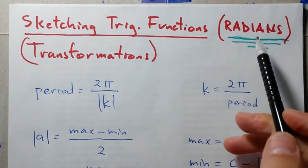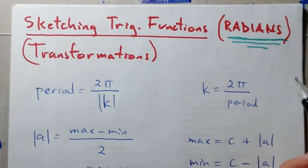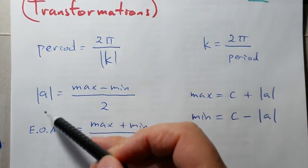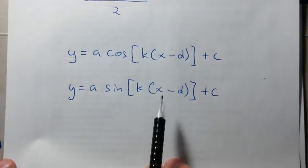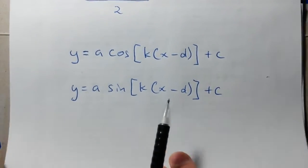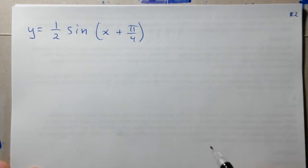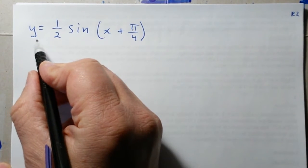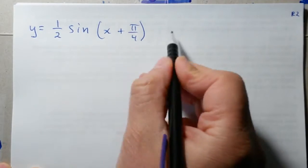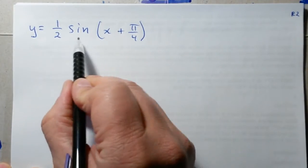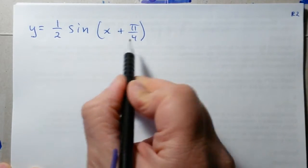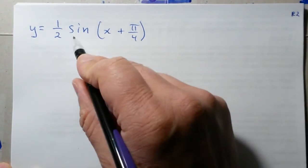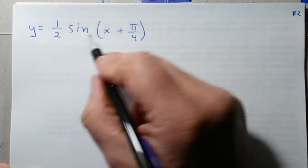We're sketching trig functions using radians. For each one, we're going to collect specific information. The question is given in this format, so let's take a look at our next example: y equals this sinusoidal function. By looking at this, let's immediately collect our data. What is our base function?